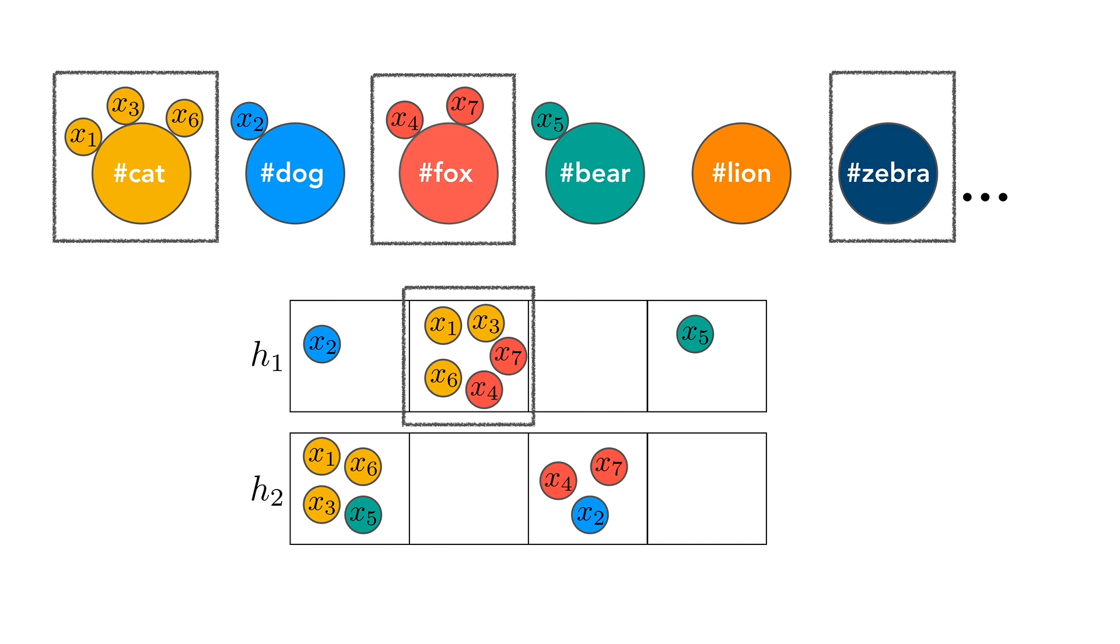The distribution of the counts within each bin now follow their own mini-Chinese restaurant processes, but crucially, we do not observe the counts of the tokens at each table. All we observe are the total number of counts in each bin.